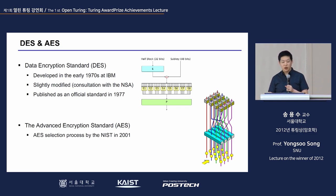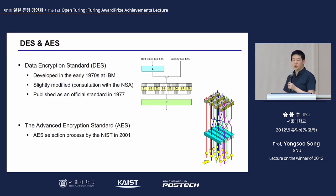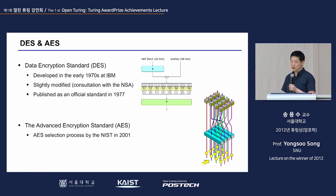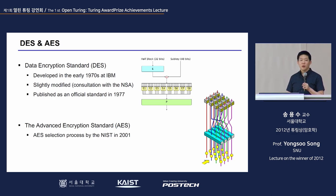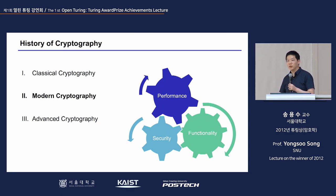Cryptography has developed further. In the 1970s, IBM developed the Data Encryption Standard, or DES. It was created in consultation with the NSA, slightly modified, and published as an official standard in 1977. Another standard, AES, was later created because there were concerns that DES's security level was too low. These two are examples of classical cryptography.